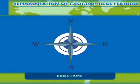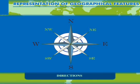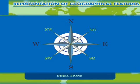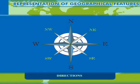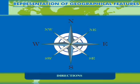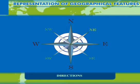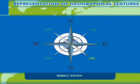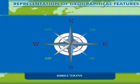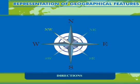Along with the four main directions, there are four other intermediate directions that lie between the main directions: North-East (between north and east), South-East (between south and east), South-West (between south and west), and North-West (between north and west).